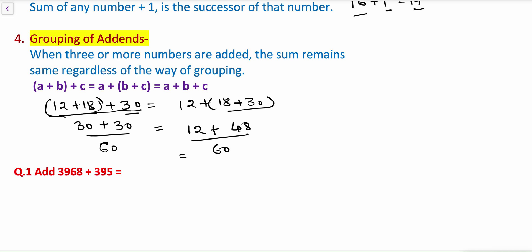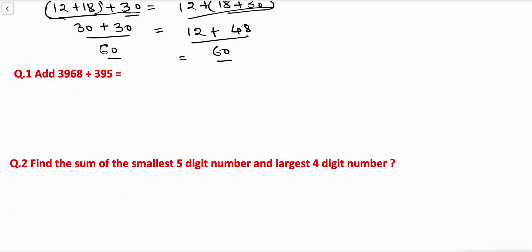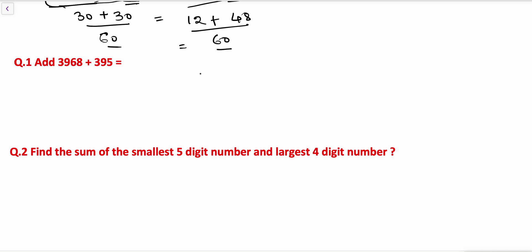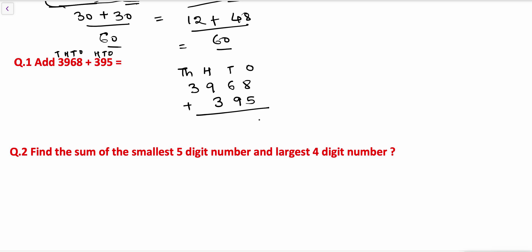Now let's see some questions on addition. 3968 plus 395. First we'll check the place value of all the digits: ones, tens, hundreds, and thousands. The number is 3968 and here it is 395. Now we'll do the addition: 8 plus 5 is 13, write 3 and carry 1.